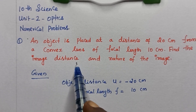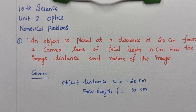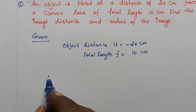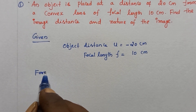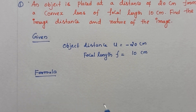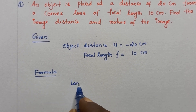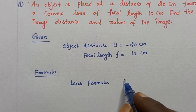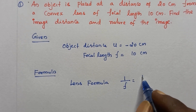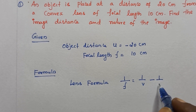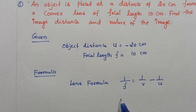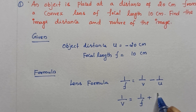What do we need to find? Image distance. What formula do we use? We are going to use the lens formula. The lens formula is given by: 1 by f is equal to 1 by v minus 1 by u. Rearranging, 1 by v is equal to 1 by f plus 1 by u.